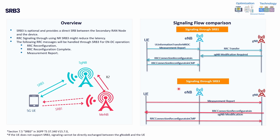The last feature is SRB3 — Signal Radio Bearer 3 — which is optional and not currently enabled in most networks. The majority of signaling goes through SRB1: messages like RRC reconfiguration complete and measurement reports travel from the 5G UE to the master node (eNB) via SRB1. Enabling SRB3 can reduce latency by allowing direct communication between the 5G UE and the gNB, removing the extra exchange through the 4G master node.